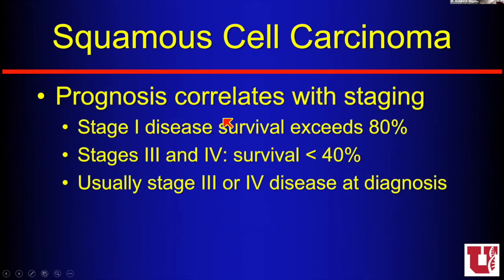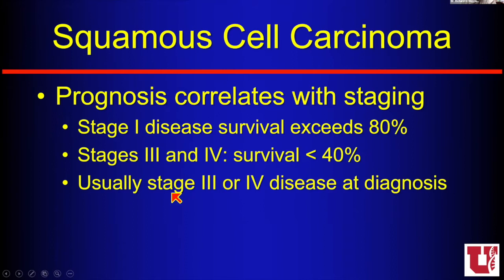We know that prognosis correlates with staging. If somebody's stage one, disease survival is greater than 80% — that's very good. The problem is that stage three and four is very bad — less than half. And patients are usually already stage three or four when they present. People can ignore pathology for a long time before they go see a doctor, it turns out.